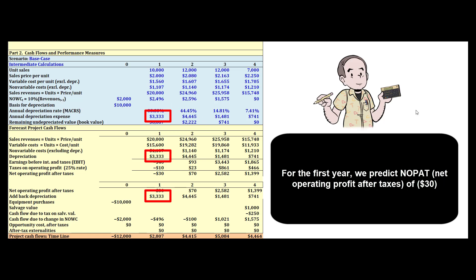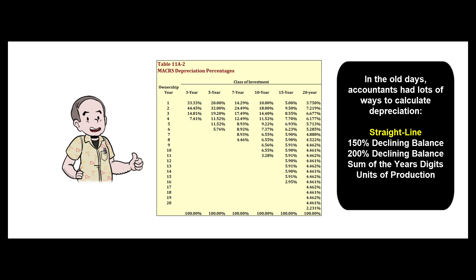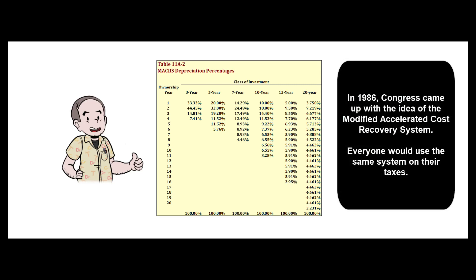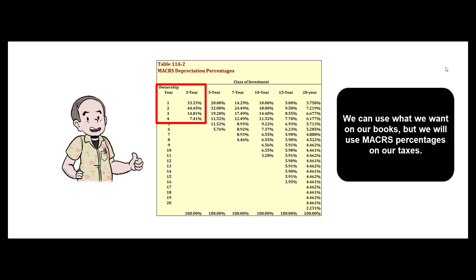Where did we get the depreciation number? We got it from the Modified Accelerated Cost Recovery System (MACRS). The federal government, tired of reviewing tax returns using straight-line, 150% declining balance, 200% declining balance, sum-of-the-years'-digits, and other methods, came up with MACRS about 40 years ago — they simply tell us the percentages to use. We're going to use the appropriate MACRS column for our equipment.